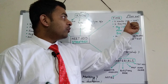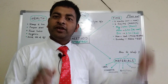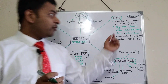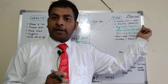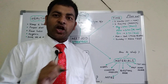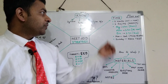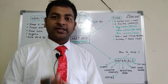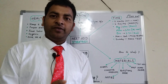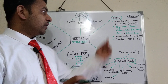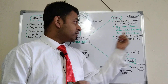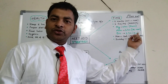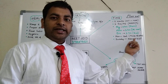We are considering six months of preparation, starting from October to March. April is not included because in April you can focus on solving mock test question papers only. In these six months, you have to devote at least six hours every day — two hours for physics, two hours for chemistry, and two hours for biology. You can study physics in the morning, chemistry in the afternoon, and biology in the evening.